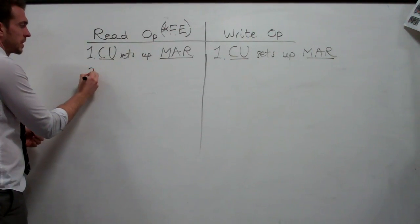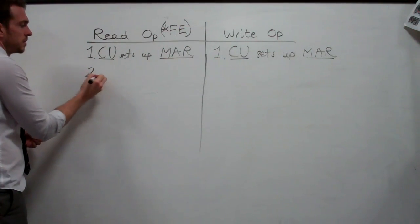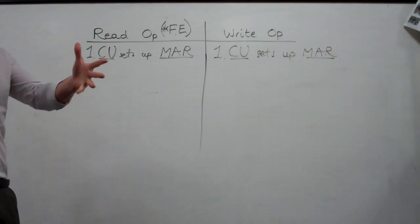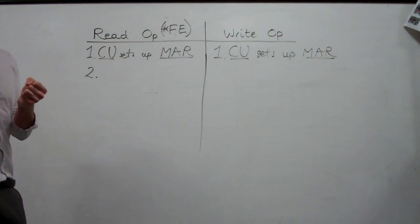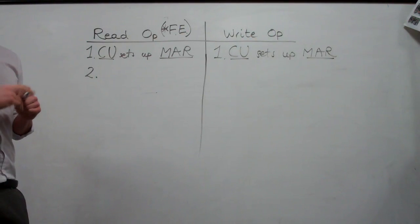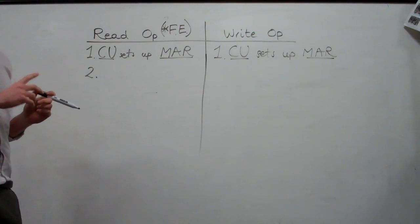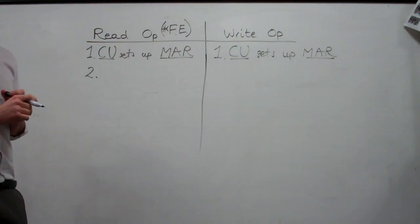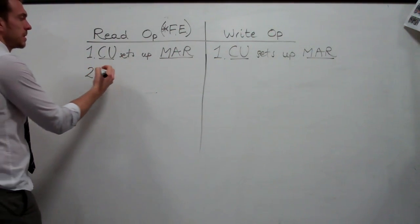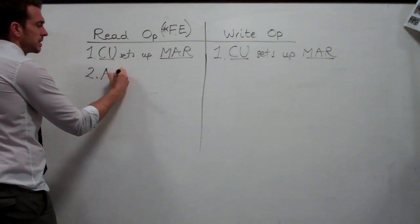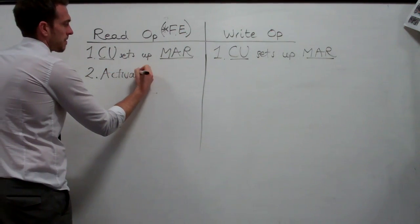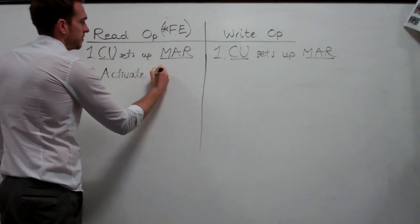This is where they're different. Remember, read is trying to bring something back in, so there needs to be an empty space for it. There's nothing in the other register yet — it's the read line. We're ready to get information there, so we activate the read line.